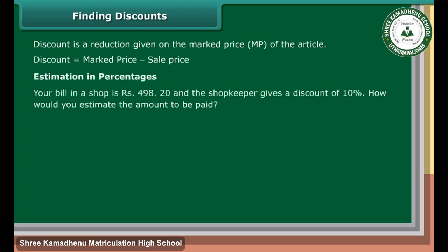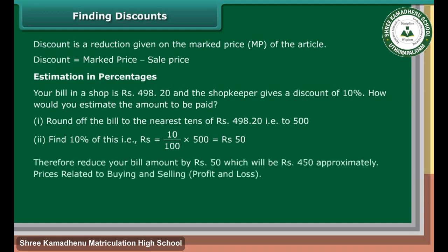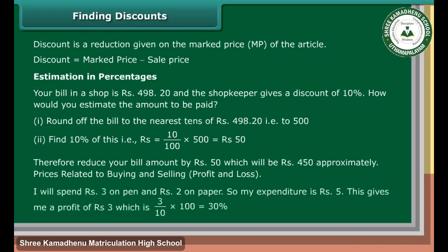Estimation in percentages: Your bill in a shop is Rs. 498.20 and the shopkeeper gives a discount of 10%. How would you estimate the amount to be paid? Step 1: Round off the bill to the nearest Rs. 498.20, that is to 500. Step 2: Find 10% of this, that is Rs. 10 upon 100 into 500, which is equal to Rs. 50. Therefore, reduce your bill amount by Rs. 50, which will be Rs. 450 approximately.